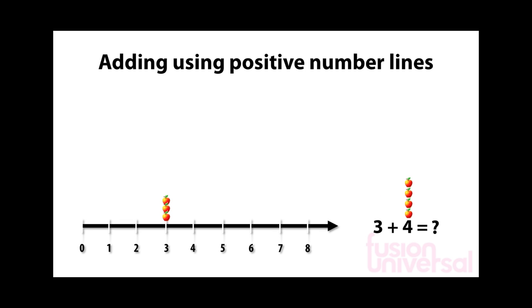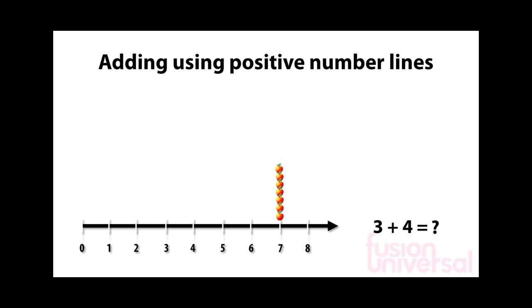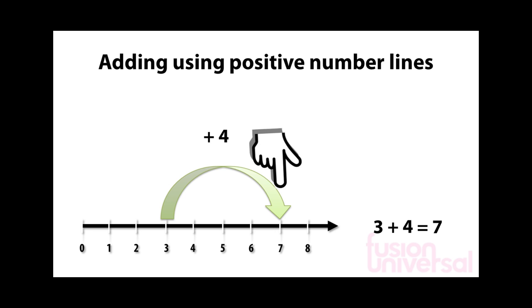We now want to add another 4 apples to this pile. For every apple that is added to our pile, the pile moves up the number line by 1. The overall effect of adding 4 is to move 4 to the right, giving us the answer 7. So 3 plus 4 is equal to 7.